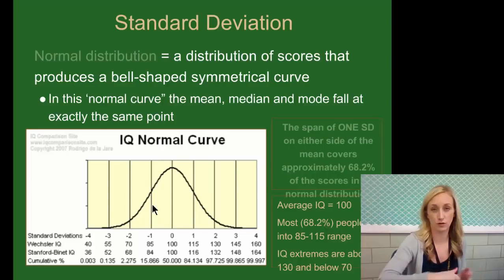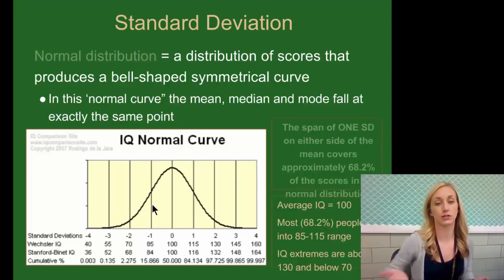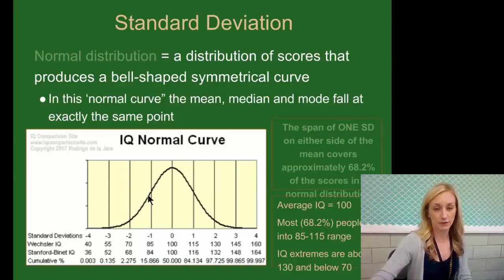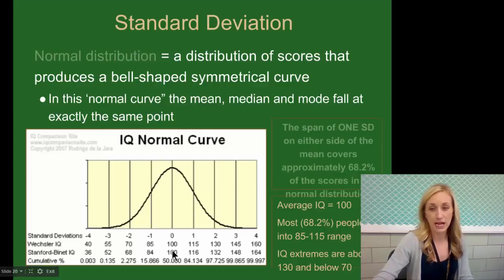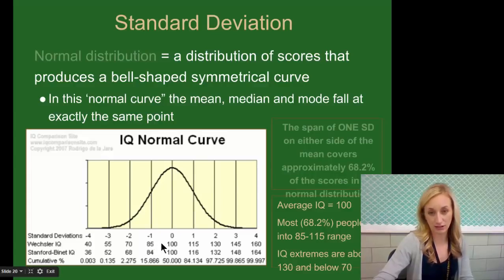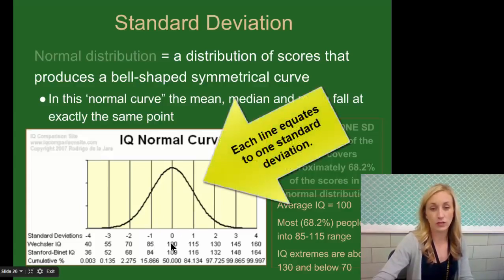This IQ normal curve shows the normal distribution of IQ scores. The center line of zero represents zero standard deviations away from the mean. For the Wechsler IQ and Stanford-Binet IQ, the average IQ is 100. Most people fall within 15 points — which is the standard deviation of 15 — within one standard deviation above and below the mean, equating to 68.2% of people.